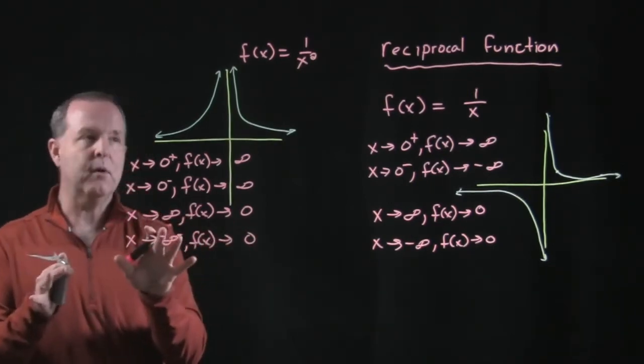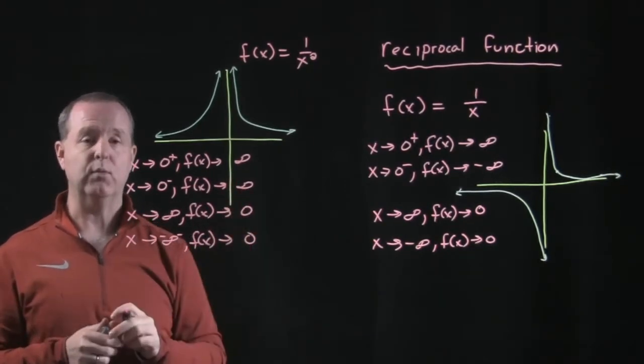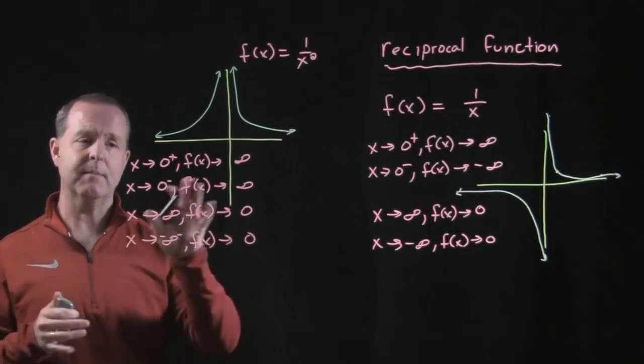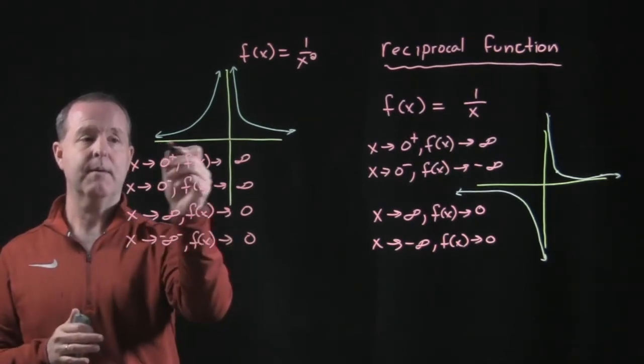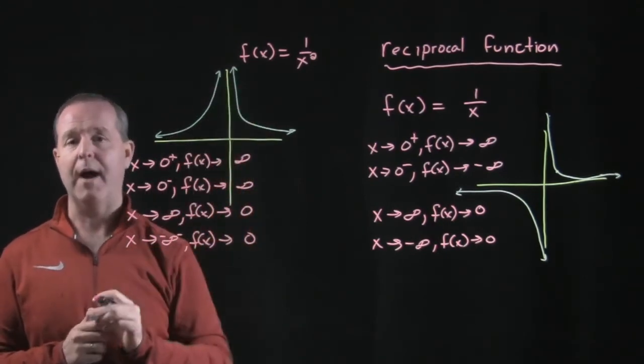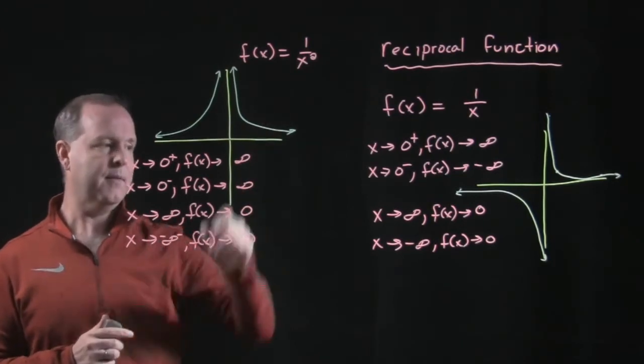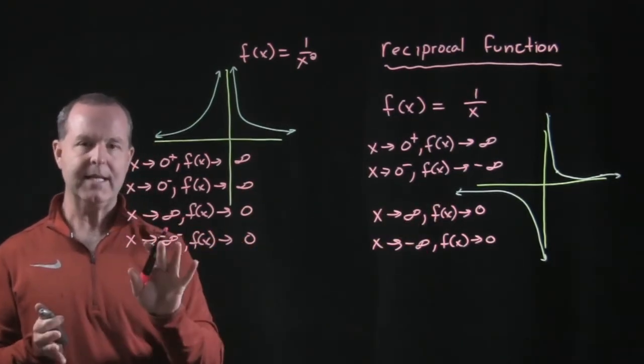So those are a couple of the reciprocal functions or a couple of the rational functions that we're going to look at are these reciprocal functions. Get an idea of some of the nuances. Now, not every point is going to be approaching a 0. These particular graphs happen to be centered on the y axis or reflective about the y, well, there's some symmetry about the y axis and here about the origin. We see that.